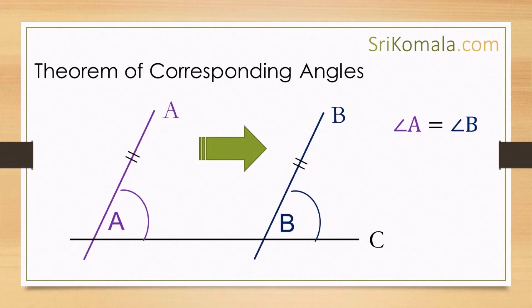As can be understood from the figure, angle B can be formed by sliding angle A along the transversal C. Angle A and angle B will be always equal, as long as line A and line B are parallel.